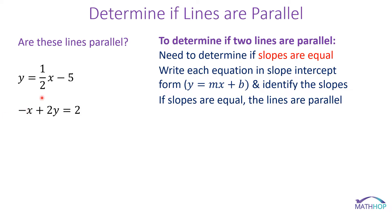Given these equations, one of them is already in slope-intercept form. I can clearly see the slope is 1/2, so m equals 1/2 for my first line. If my second line has a slope of 1/2, they are parallel. However, it is not in slope-intercept form, so let's do some work.